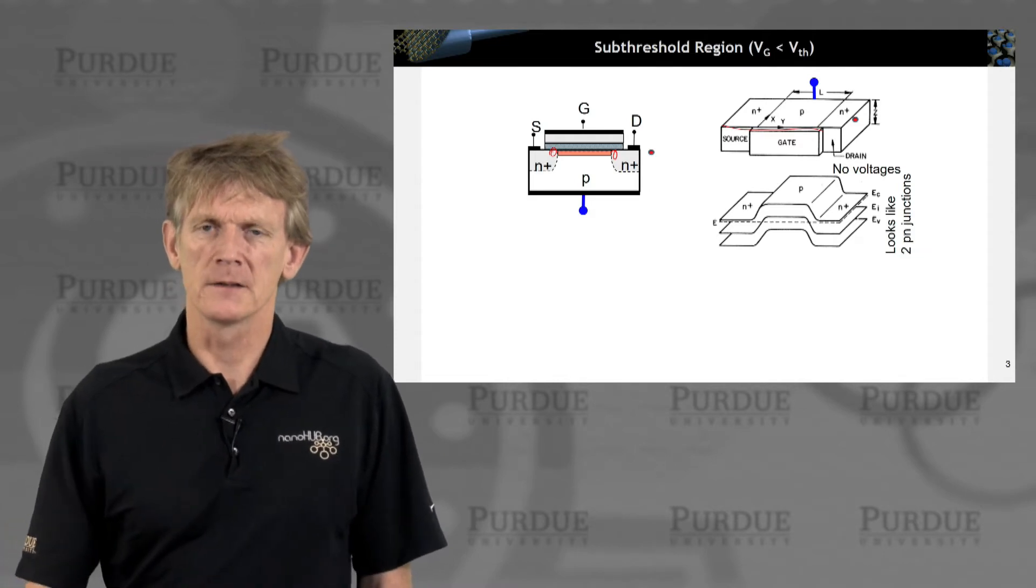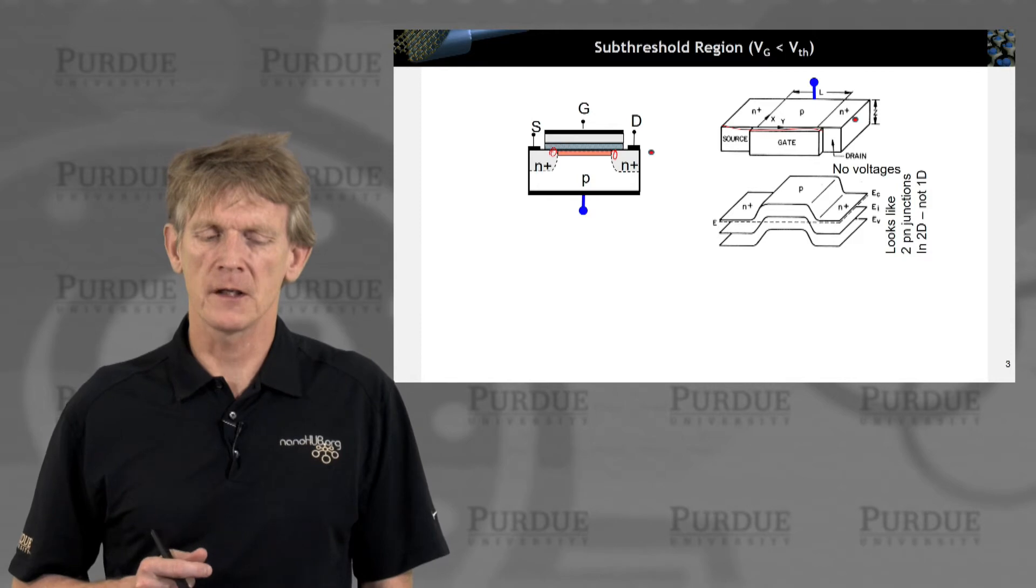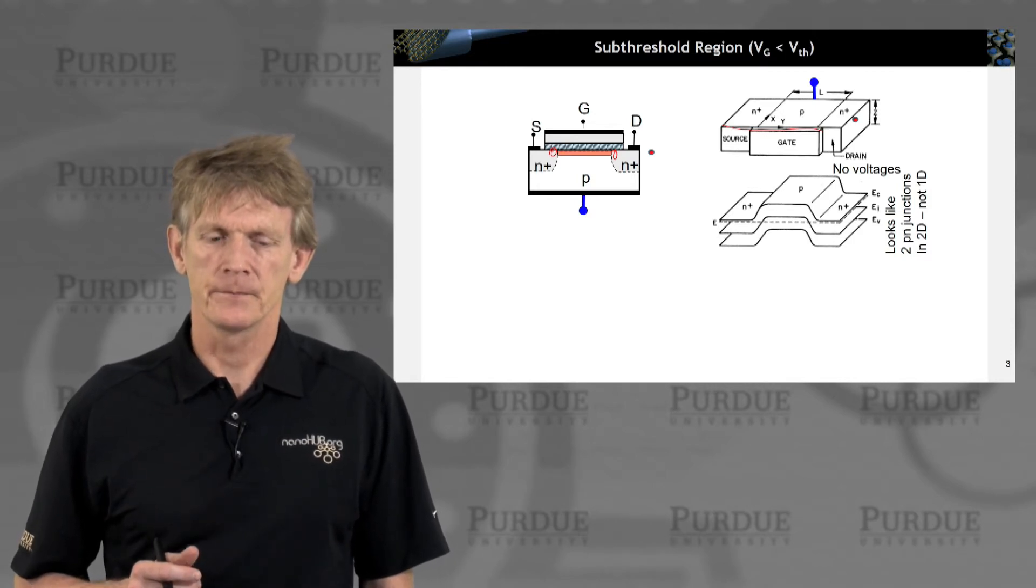So in the olden days this would be a pretty long distance here between source and drain. So it does look like two PN junctions, but remember this distance is quite far away, and now it's being done in 2D.